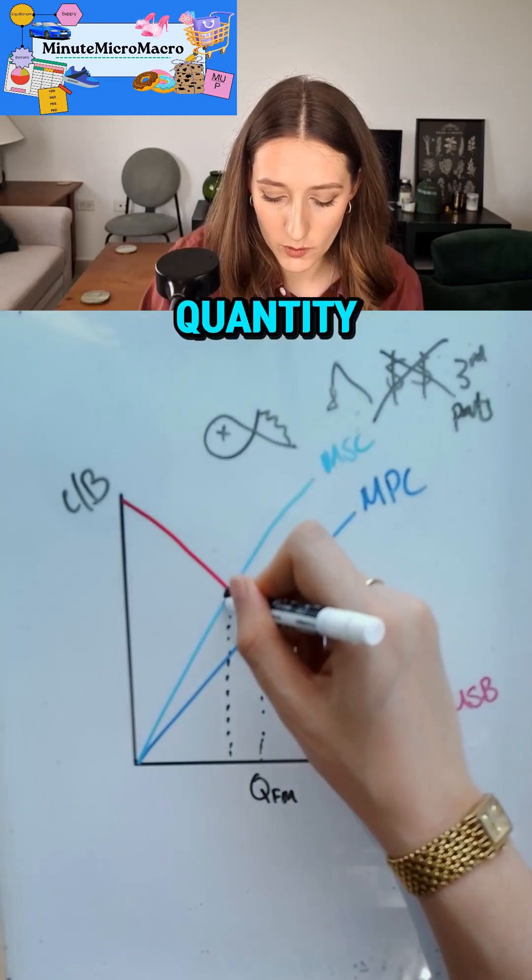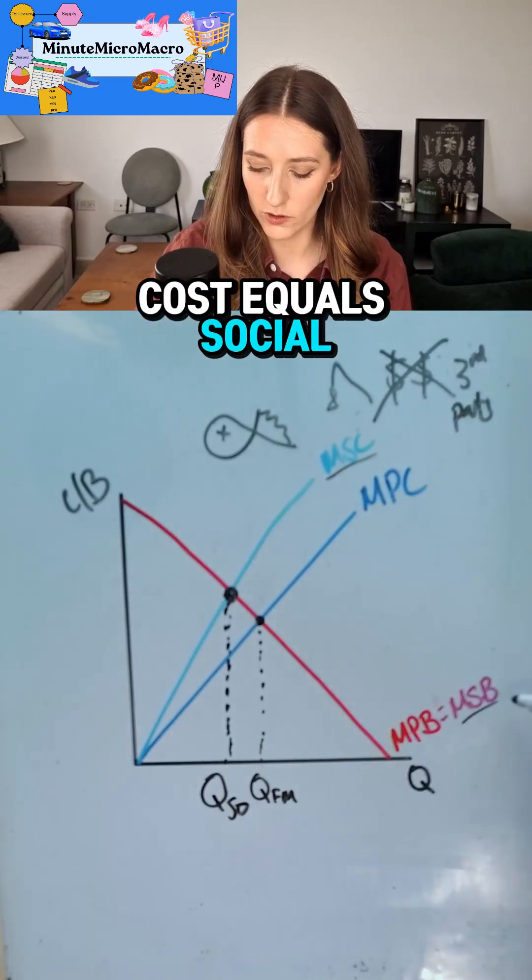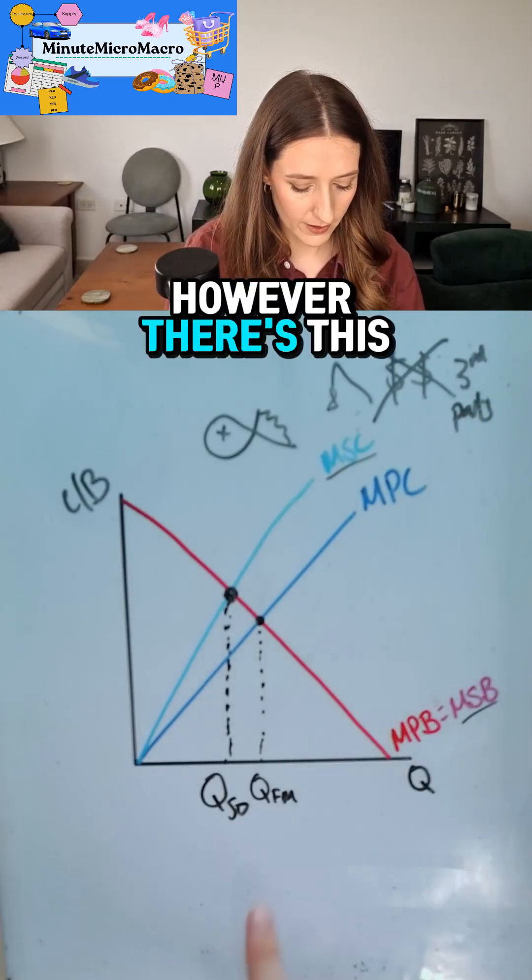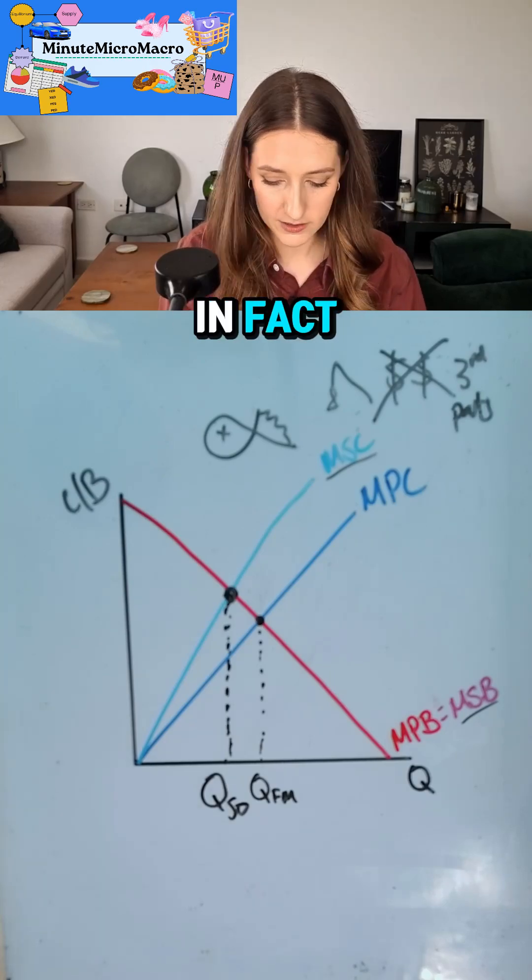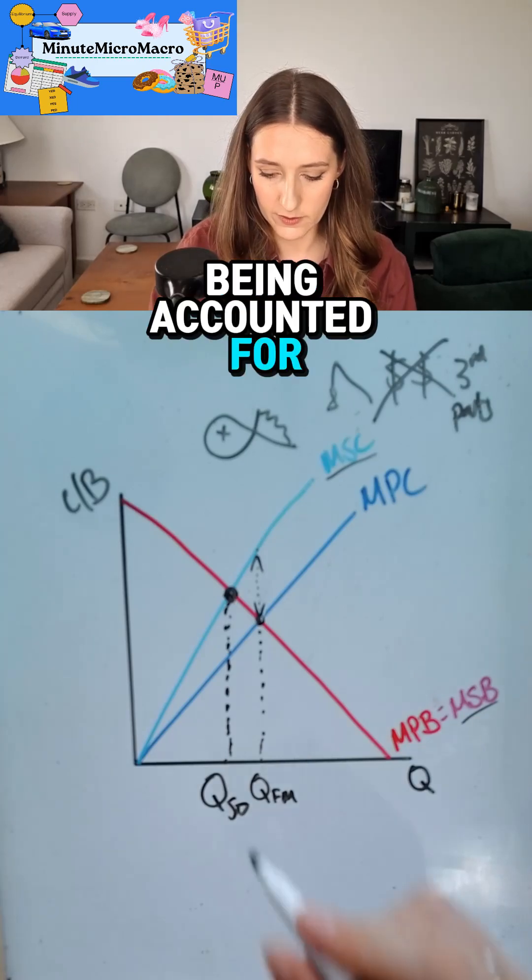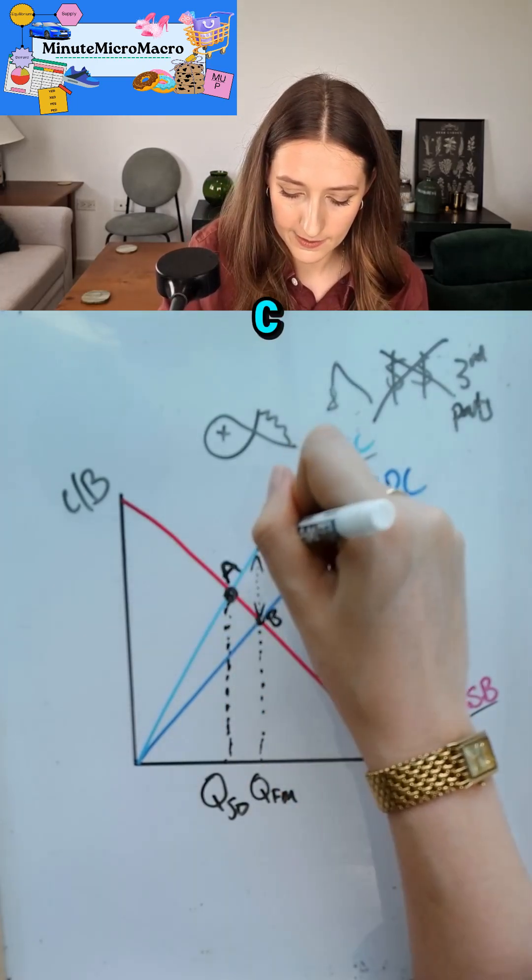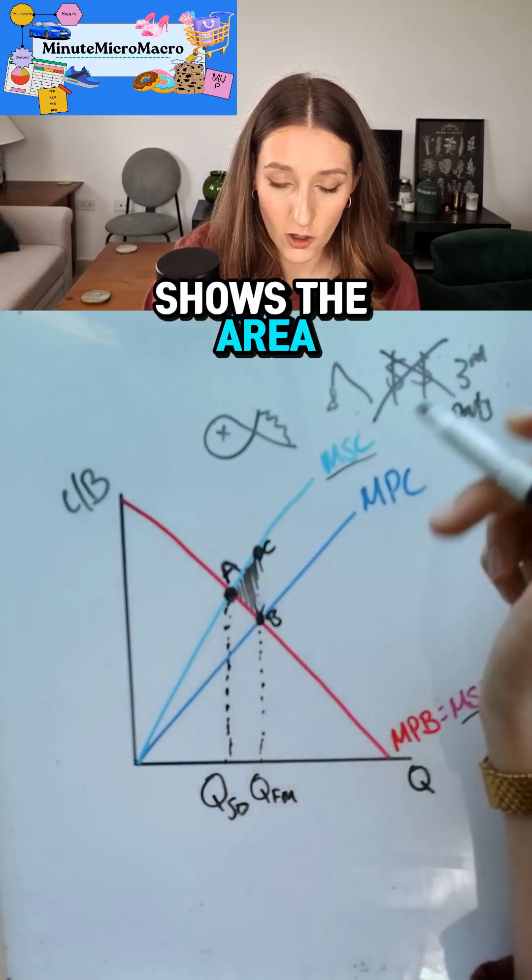The socially optimal quantity, I'm going to call Q-SO, is where social costs equals social benefits. However, there's this gap. We're not producing a socially optimal quantity. In fact, we're producing and there is this externality that is not being accounted for. And so ABC—we go up from the free market—shows the area of deadweight loss, or some places will call it welfare loss.